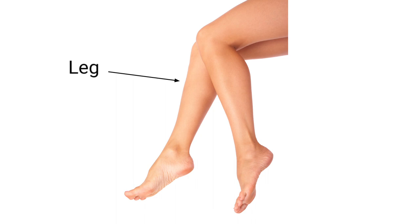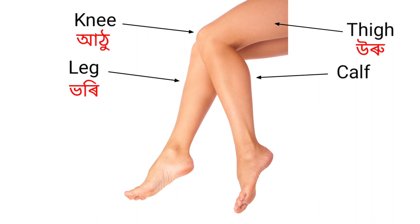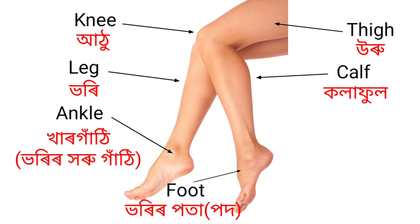Leg — that means Bhori. Thigh — that means Uru. Knee — that means Athu. Calf — that means Colorful. Foot — that means Bhorir Pot. Ankle — that means Khar Gathi. Heel — that means Guru Haa.